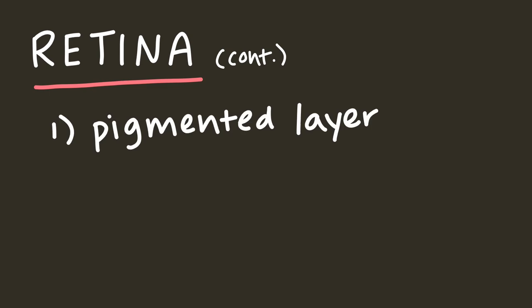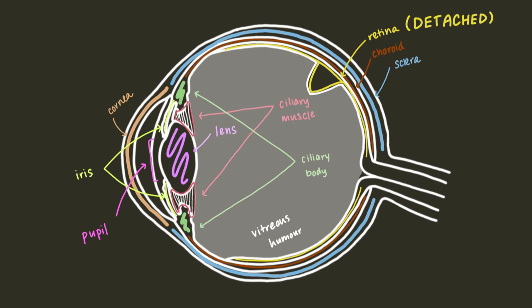The retina has two layers, the pigmented layer and the neural layer. To keep this video short, I'm going to gloss over their specific functions, but I do want to mention them because they're involved in a condition called retinal detachment, which is when the two retinal layers separate.